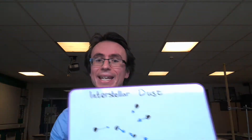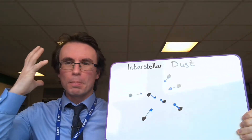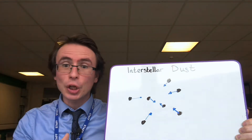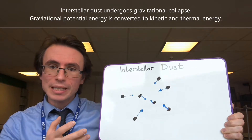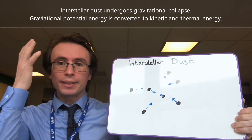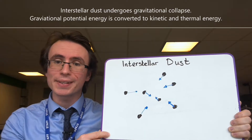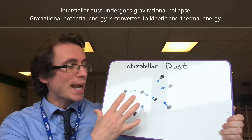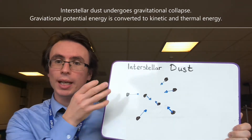It all begins with a cloud of interstellar dust. There are multiple interstellar clouds that are forming stars at the moment as we speak. They consist mostly of hydrogen, and these hydrogen particles are going to be experiencing a gravitational force — they are going to be undergoing a gravitational collapse.